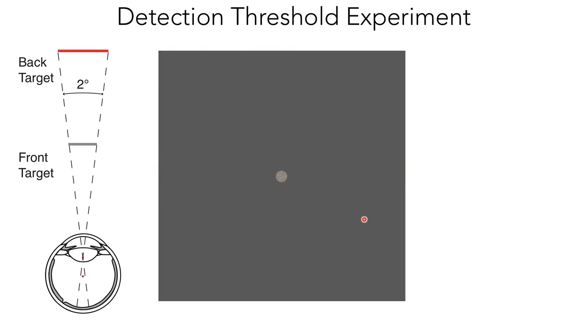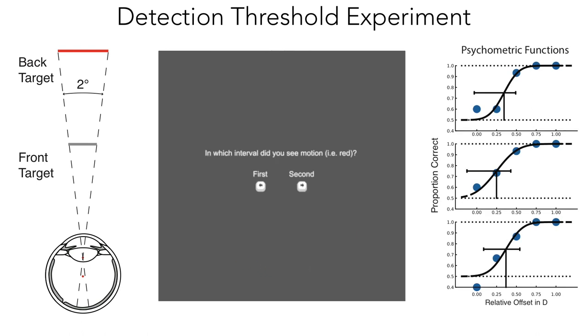Subjects viewed a gaze target rotating around a front and back target separated by some distance. Over the course of 225 trials, we measured the minimum distance between these two targets at which the relative motion between them was detectable for multiple subjects.